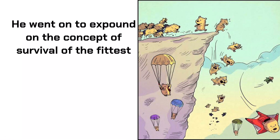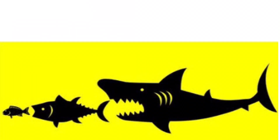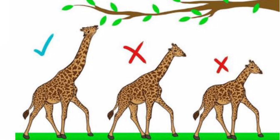He went on to expound Darwin's concept of survival of the fittest, arguing that only the strong creatures will survive and evolve. Animals will have to struggle to preserve their existence. For instance, giraffes have extremely long necks, which helps them survive in the environment they find themselves. Because the trees keep growing, the giraffe has to keep growing its neck longer and longer in order to reach the trees and keep eating from them to survive.